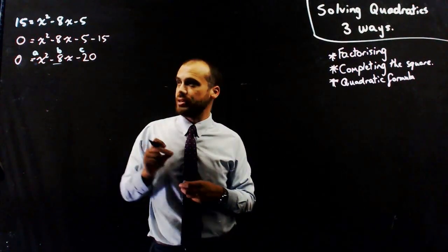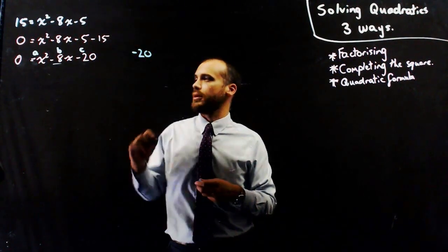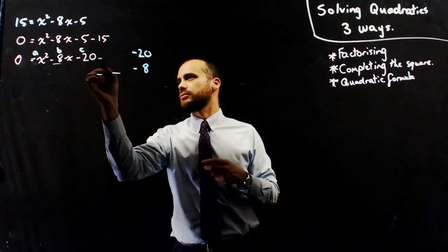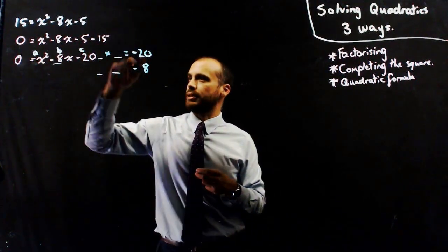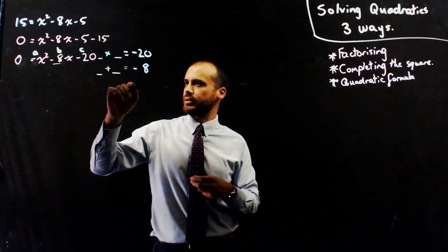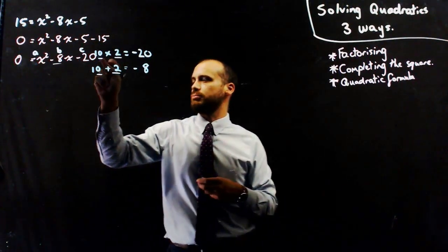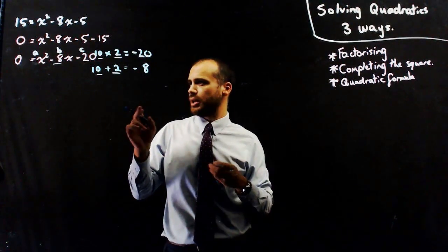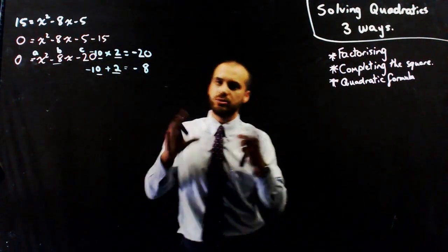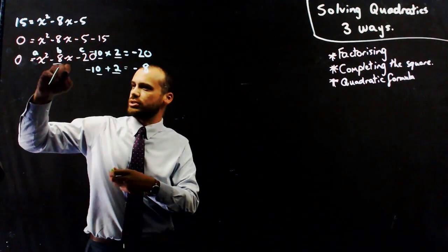I find something called my AC number, which is A times C, so 1 times negative 20, which is negative 20. I find my B value, which is negative 8, and I need to find two numbers that when multiplied together make my AC number, and when added together make my B value. The two numbers are negative 10 and positive 2, because negative 10 plus 2 makes negative 8. This is also sometimes called the decomposition method, because at this stage you decompose the B value.